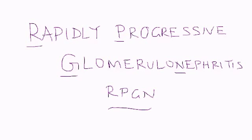In this video, I'm going to talk about rapidly progressive glomerulonephritis, also abbreviated RPGN. Before we get into the big long talk about this, I think it's important to draw a diagram of the nephron, which most of you know is the unit component of the kidney. So here's a basic diagram of a nephron.